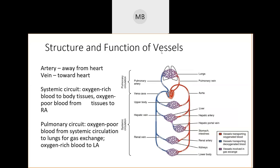We'll mostly be talking about the systemic circuit — your heart getting oxygenated blood to the rest of your body and back. You also have a pulmonary circuit, which gets blood from the heart to the lungs to exchange carbon dioxide for oxygen and then back. For the systemic circuit, arteries are red and veins are blue; those switch for the pulmonary circuit, which exists to oxygenate the deoxygenated blood.